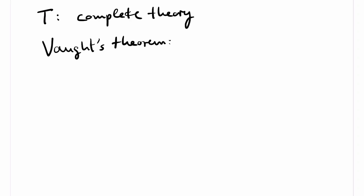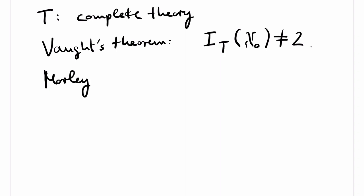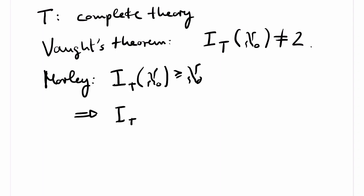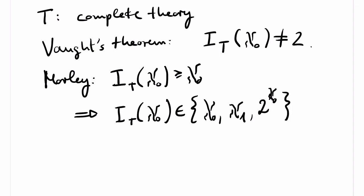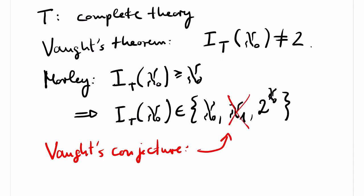I will now mention some famous results in this context and a famous open research problem. Let T be a complete theory over a countable signature. Vaught's theorem states that T can't have exactly two countable models up to isomorphism. Exactly one is possible, as we have seen, but not two. Morley proved that if T has infinitely many countable models, then there are either countably many models, or continuum many, or perhaps aleph_1 many countable models. Aleph_1 is the smallest uncountable cardinal, and if the continuum hypothesis does not hold, then this is a different cardinal than 2 to the aleph_0. Now Vaught's conjecture, which is still open, states that we can remove aleph_1 from the statement, so it states that as soon as we have uncountably many countable models, we have continuum many countable models.